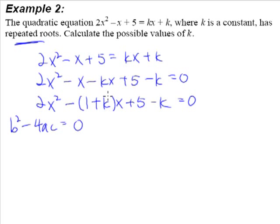Now, since this is our b, remember that this b includes the negative sign. So we are going to have -(1 + k), the whole thing in a bracket, squared. This is your b². Then minus 4ac will be equal to zero.